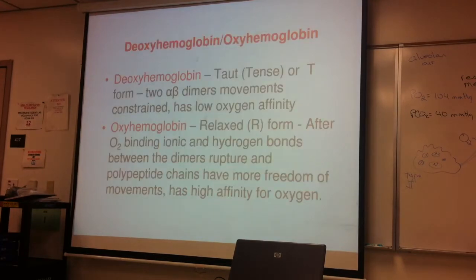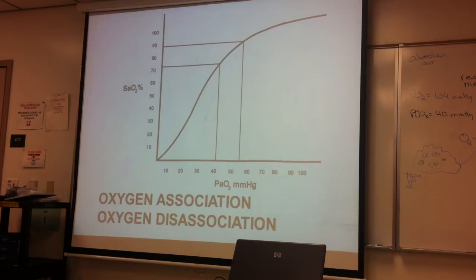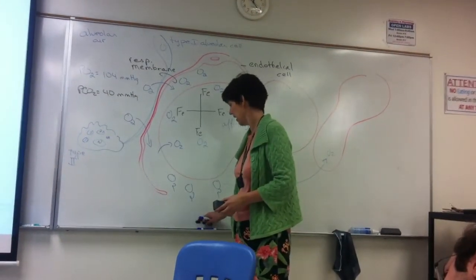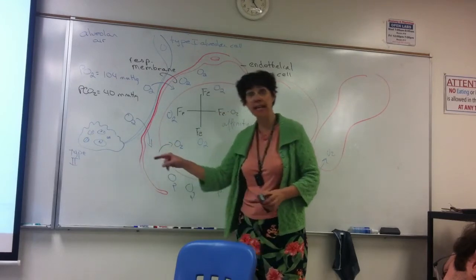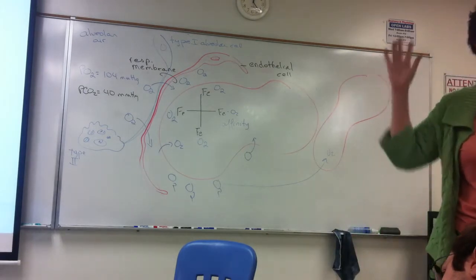Deoxyhemoglobin is when oxygen isn't attached to the iron, and oxyhemoglobin is when iron is attached to oxygen. Carboxyhemoglobin is carbon monoxide bound to hemoglobin, and carbaminohemoglobin is carbon dioxide bound to hemoglobin. We'll look at those terms again tomorrow. What I want to do now is look at the relationship between PO2 and oxygen binding — the oxygen dissociation curve.